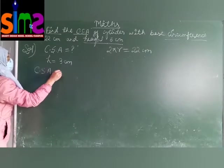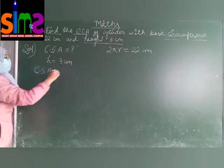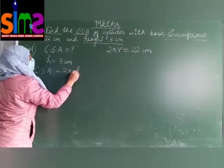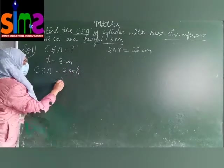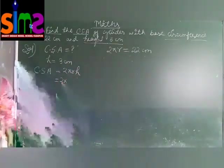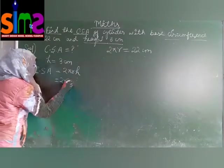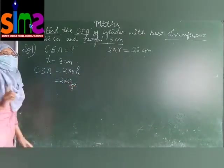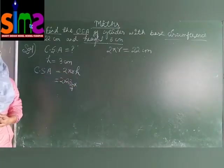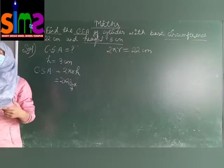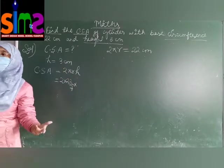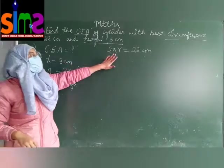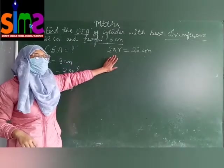What is the formula of CSA of cylinder? 2 pi r h. Very good. 2 pi r h. We have h. What is the value of pi? 22 upon 7. Do you have a value of r? First of all, you will find out the value of r. And you will find out the value of r from circumference.